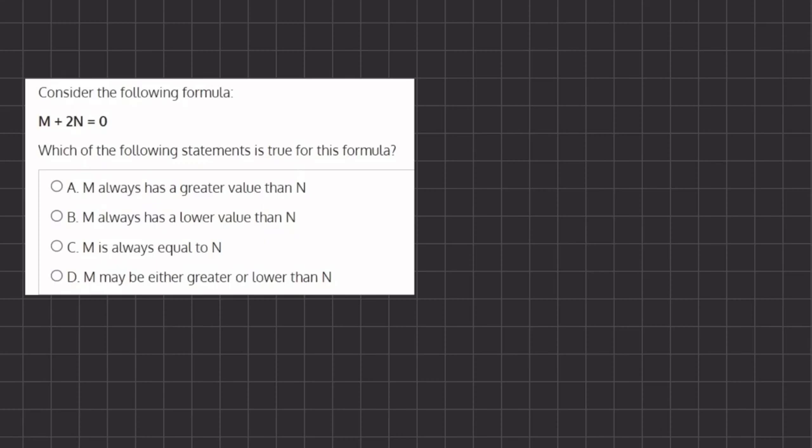Alright, so in this problem we have a formula m plus 2n equals 0, and we want to see which of the following statements is true for this formula.